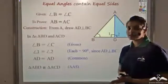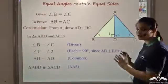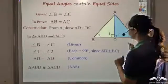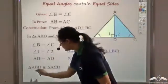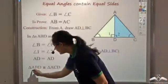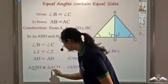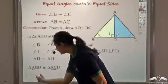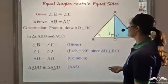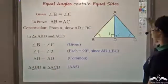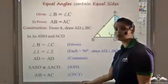Now once the triangles are congruent, I can say that the corresponding parts are also equal. So I can say AB is equal to AC — the corresponding parts are equal. So AB is equal to AC by CPCT, which means corresponding parts of congruent triangles.